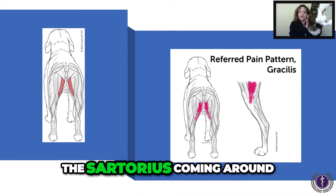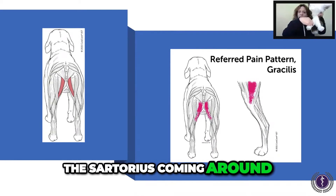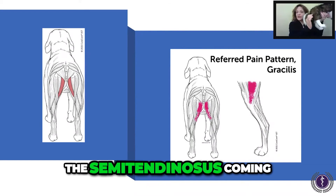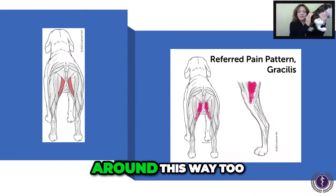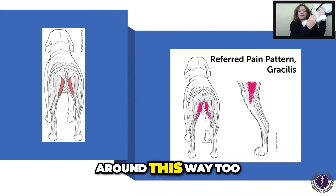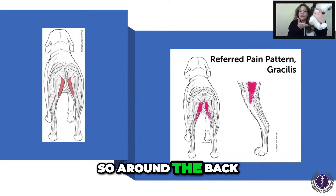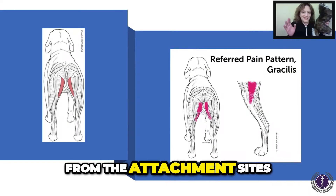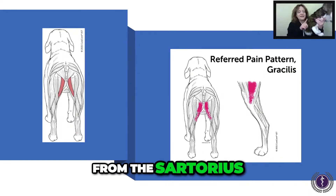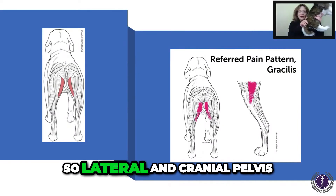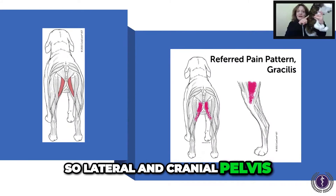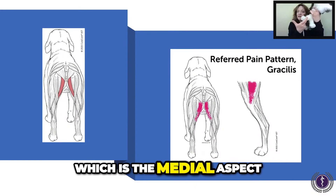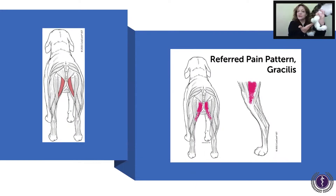You have the sartorius coming around, attaching distal to the tibial condyle. You have the gracilis from the medial aspect, and you have the semitendinosis coming around the back — so it's a hamstring. You're getting proprioceptive information from the attachment sites from the sartorius, lateral and cranial pelvis, down to the gracilis on the medial aspect, and the semitendinosis.